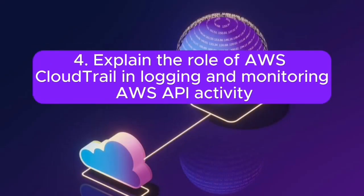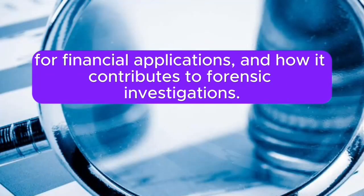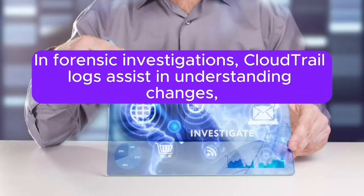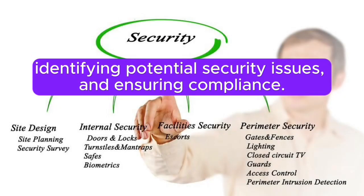Question 4: Explain the role of AWS CloudTrail in logging and monitoring AWS API activity for financial applications and how it contributes to forensic investigations. Answer: AWS CloudTrail logs API activity. In forensic investigations, CloudTrail logs assist in understanding changes, identifying potential security issues, and ensuring compliance.